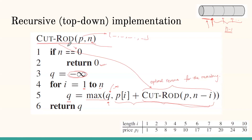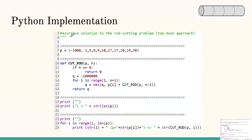The implementation is straightforward. The price table has the price of a rod of length zero as a very large negative number, length one is one, two is five, and so on. The rod-cut function takes the price list and length n. If n equals zero, return zero. Otherwise initialize Q to a very large negative value and iterate from one to n. Note: in Python, range(1, n) goes up to n−1, so we use range(1, n+1) to include n — that's a Python caveat.